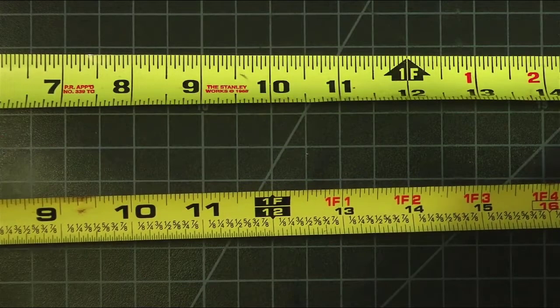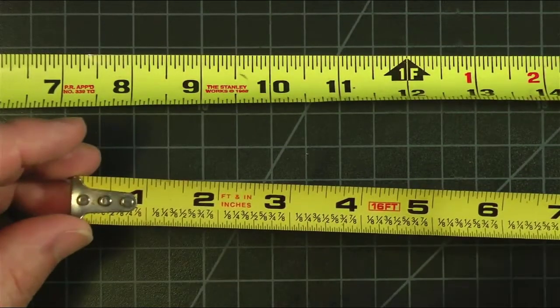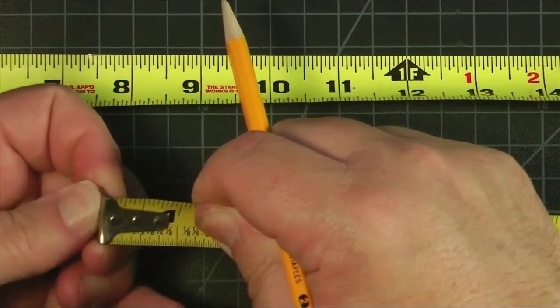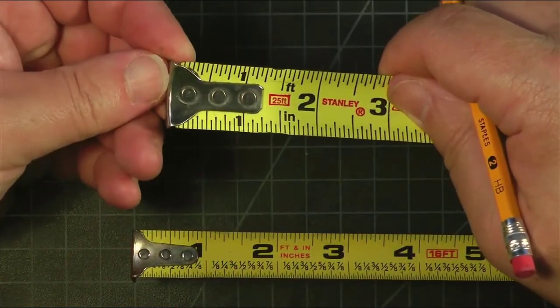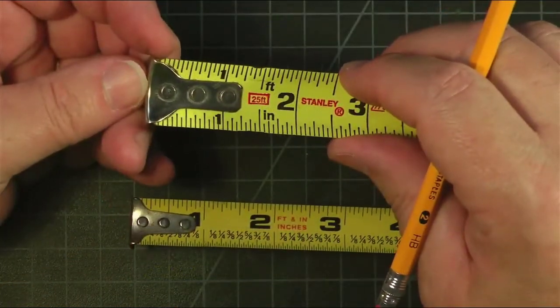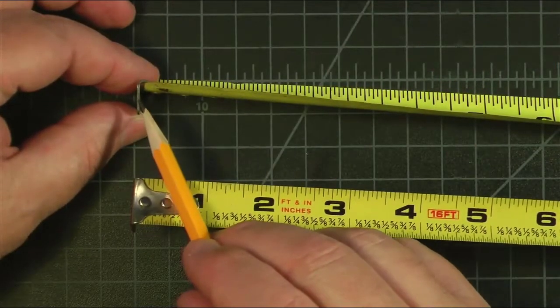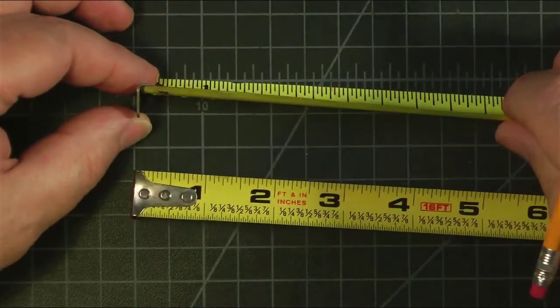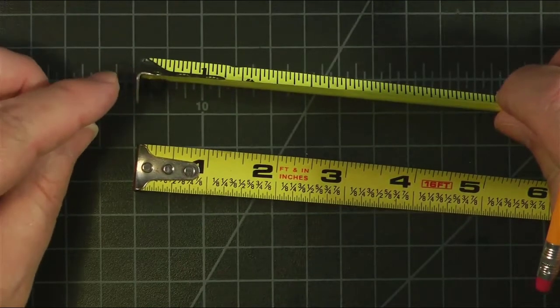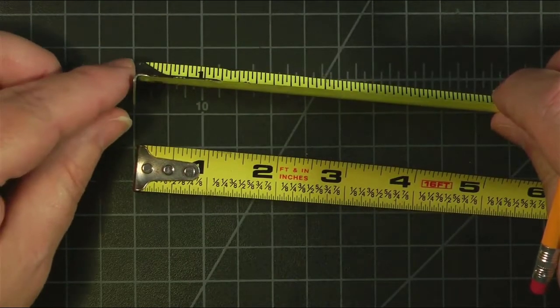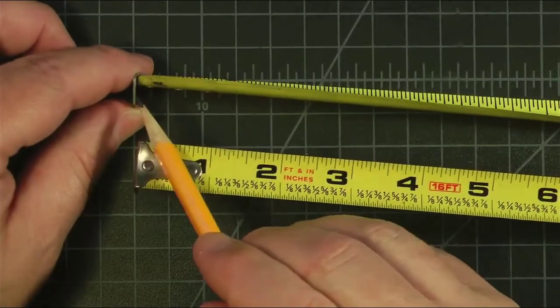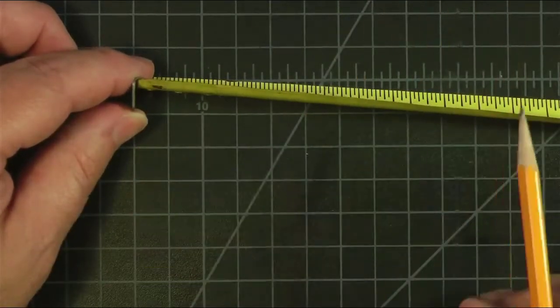Now I promised you I'd tell you why the hook was loose. And notice, look at this one. It moves by just a little bit. This one moves a little bit easier. Well, the reason why this moves is to account for the thickness of this metal here. Because if you're going to measure something to the inside, it wants to move in so it's that thickness adjusted.